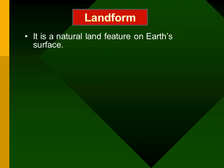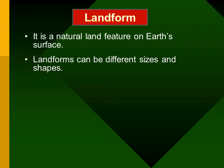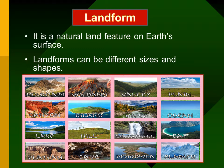A landform is a natural land feature on earth's surface. Landforms can be different sizes and shapes. Some examples include mountain, volcano, valley, and plain — plains are flat landforms on high or low ground. You can also see canyon, island, river, ocean, lake, hill, waterfall, bay, plateau — a plateau is a flat landform on high ground — cave, peninsula — usually near the coast extending into water — and glaciers.